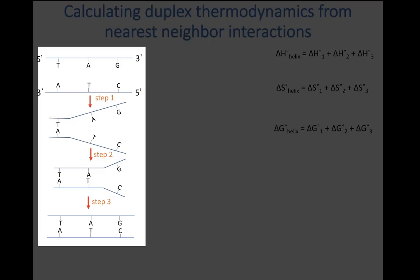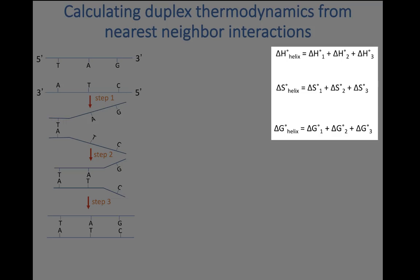In this example, we've broken this process up into three steps. We start out in step one by forming the base pair on the left, which in this example is a TA base pair. Then we proceed to form one base pair at a time, going from left to right. So in step two, we form the central base pair, which happens to be an AT base pair. And in step three, we form the base pair on the right, which is a GC base pair. If we can calculate the values of these state functions for these three steps, we can just add them together to get the values for the formation of this three base pair duplex.